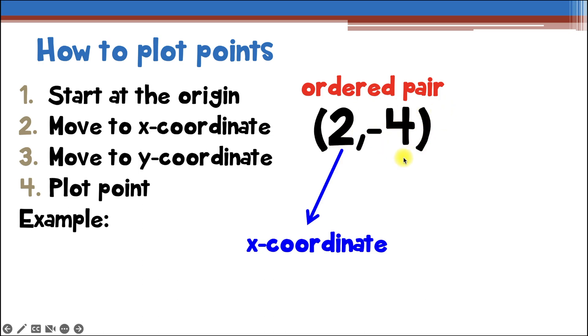And this second number here in the ordered pair is called the y coordinate. It basically does the same thing, except for going up and down. If this is a positive value, you're going to move up. And if it's negative, you're going to go down.